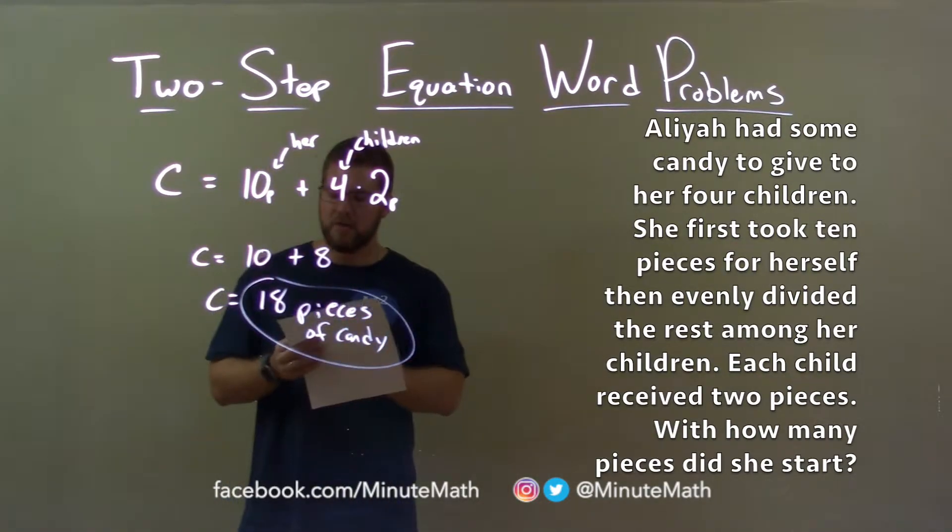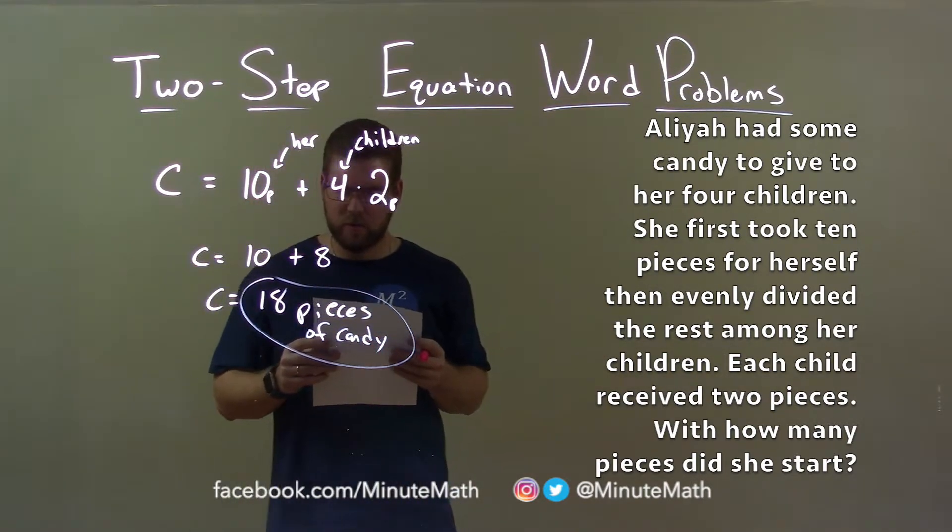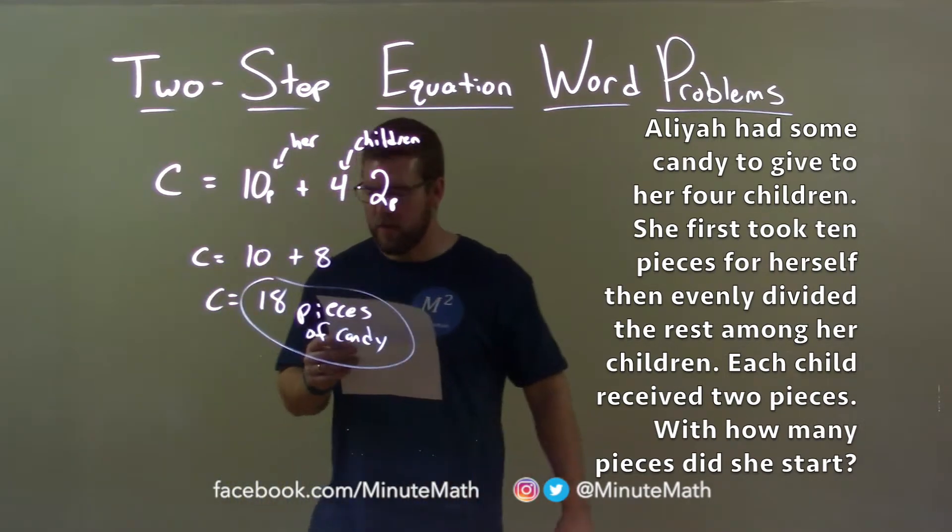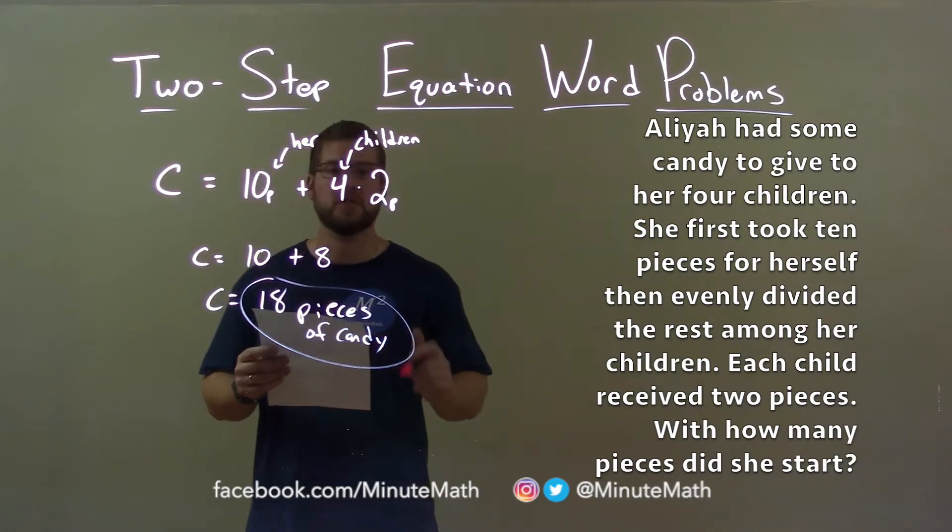So, quick recap. We're given the word problem. Aaliyah had some candy to give her four children. She first took 10 pieces for herself and then evenly divided the rest among her children. Each child received two pieces. With how many pieces did she start?